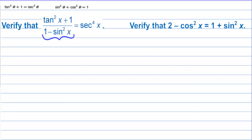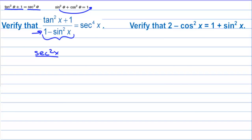Tangent squared x plus one is the same as secant squared. So the top becomes secant squared x. The denominator: one minus sine squared turns into cosine squared. So we have secant squared x over cosine squared x, and that is supposed to be equal to secant to the fourth of x.